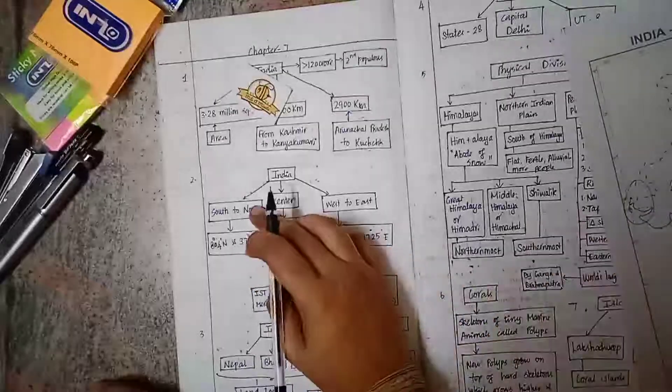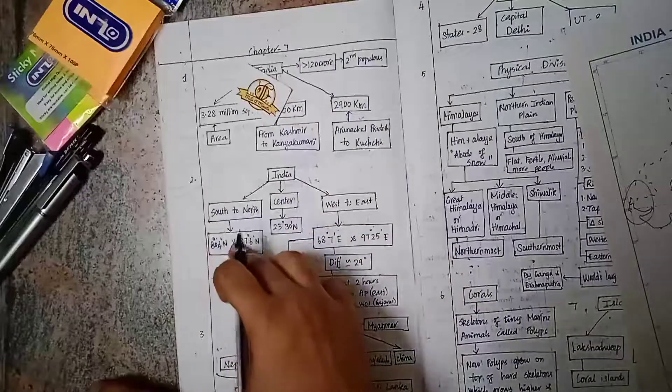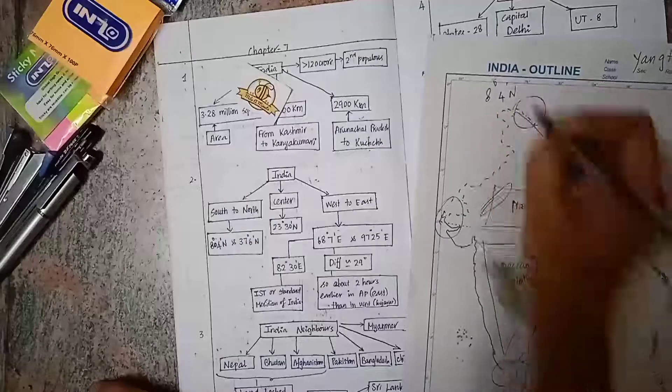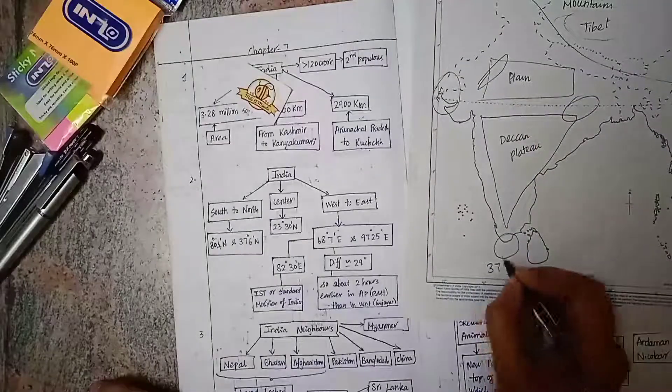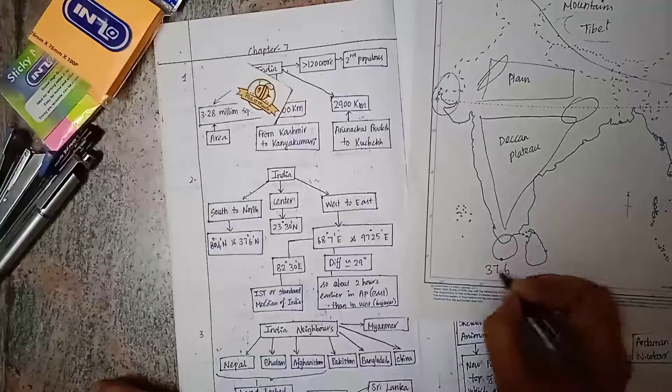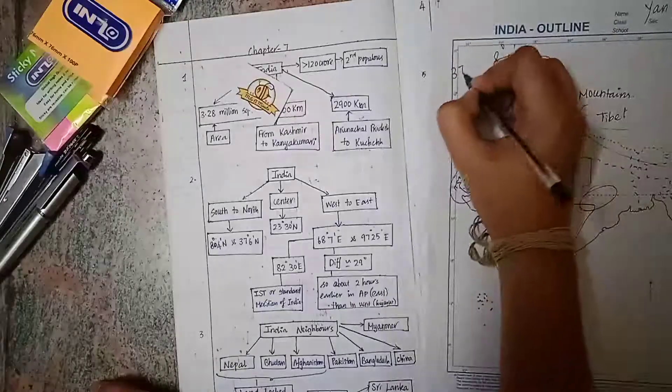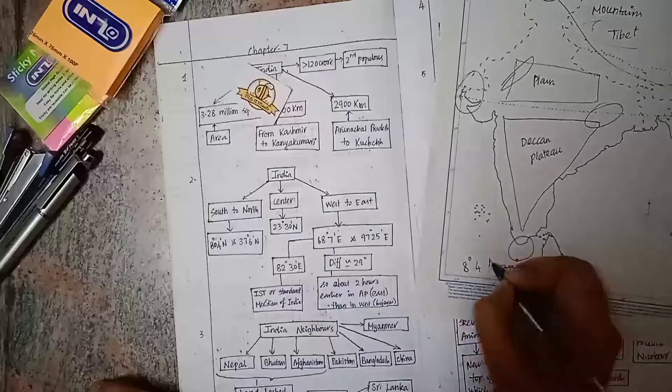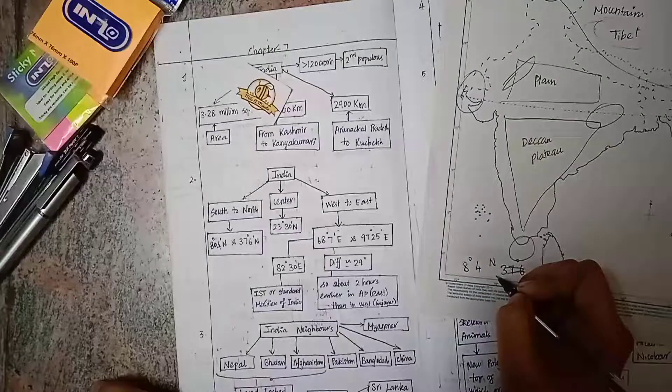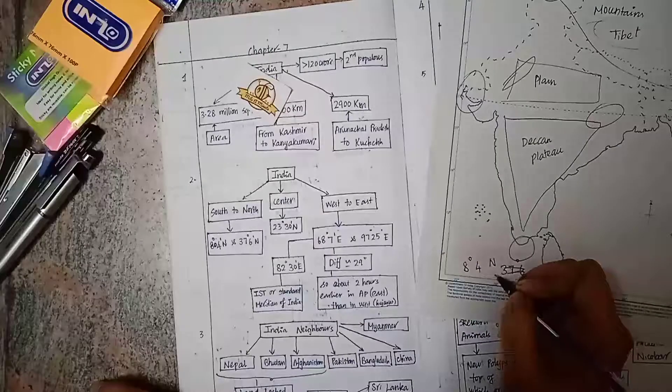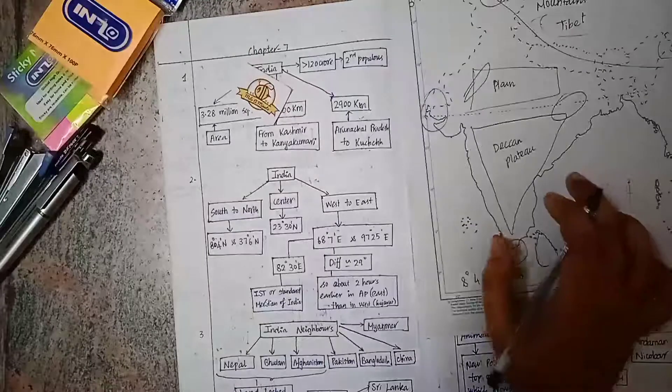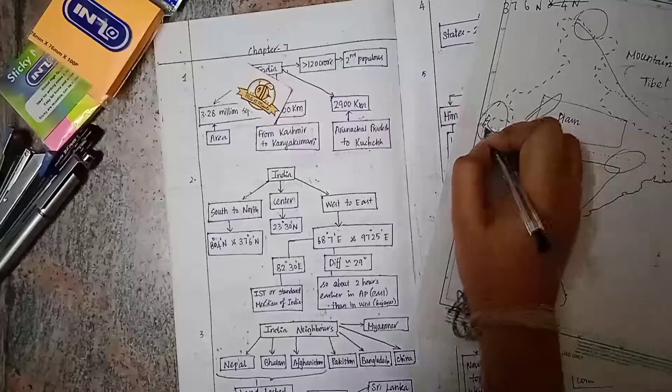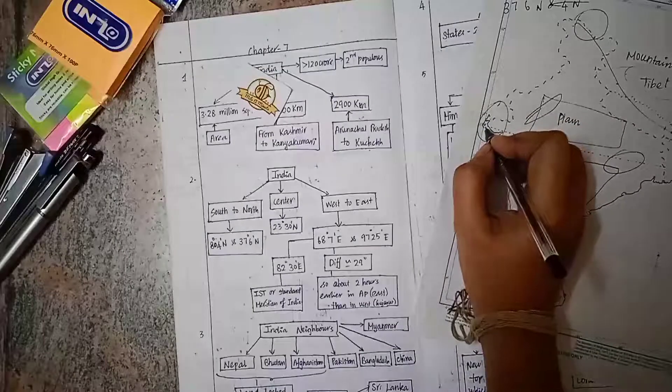India from south to north spans from 8°4' north latitude at the bottom to 37°6' at the top. In the center, we have 23½° north, which is the Tropic of Cancer.